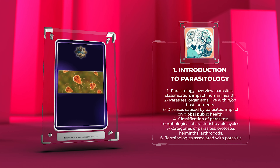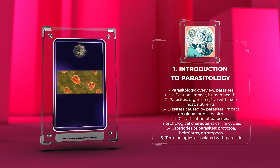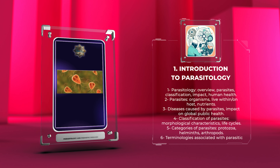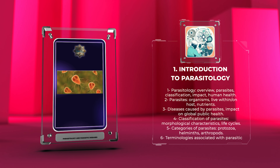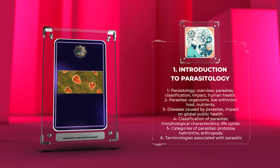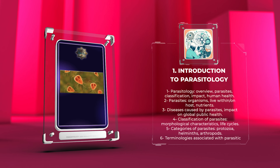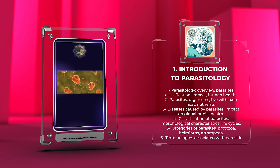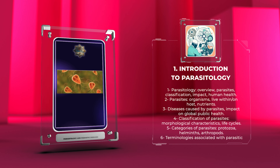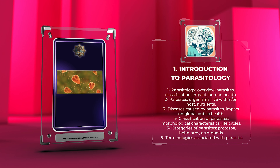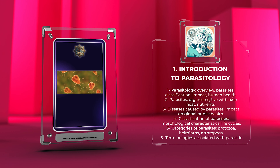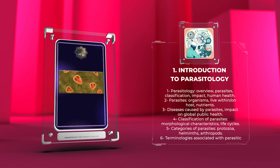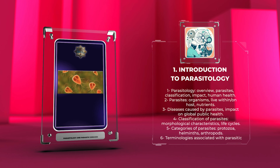Parasites are organisms that live within or on another organism, called the host, and derive nutrients from it. They can cause a wide range of diseases and have a significant impact on global public health. Parasites are classified based on their morphological characteristics and life cycles. The different categories of parasites include protozoa, helminths, and arthropods.